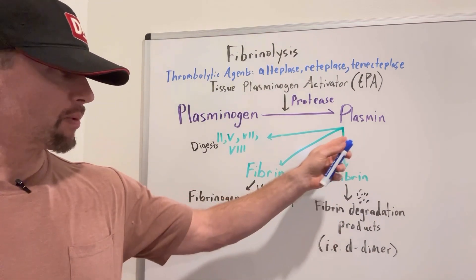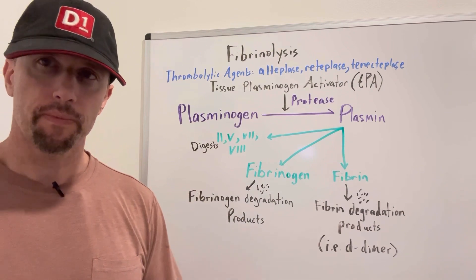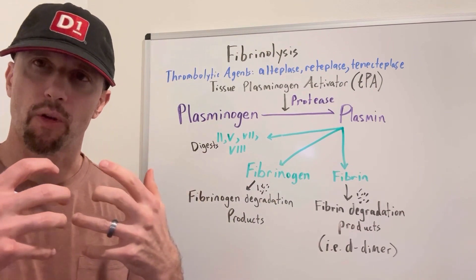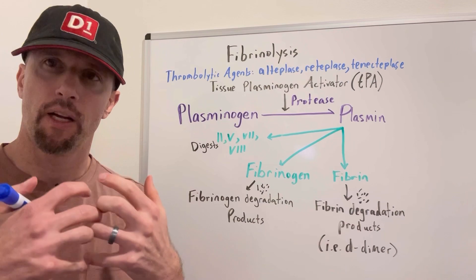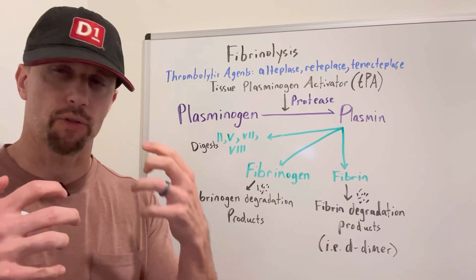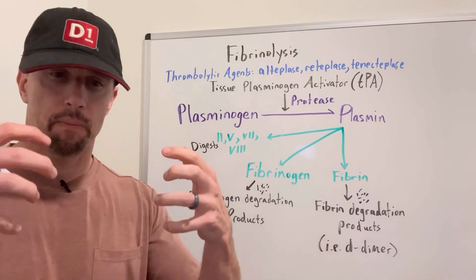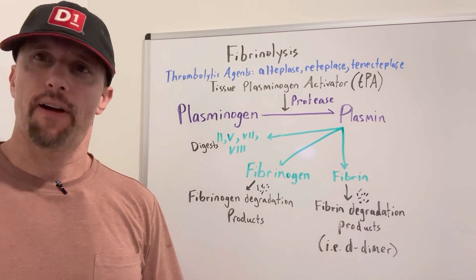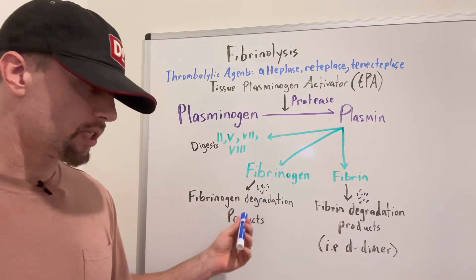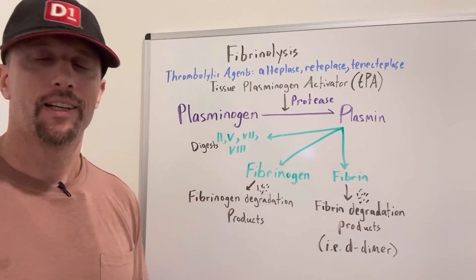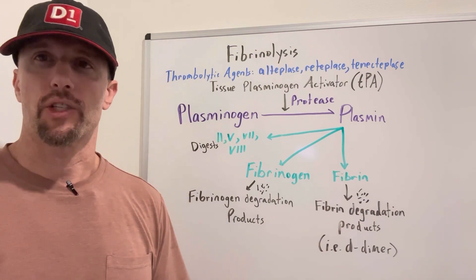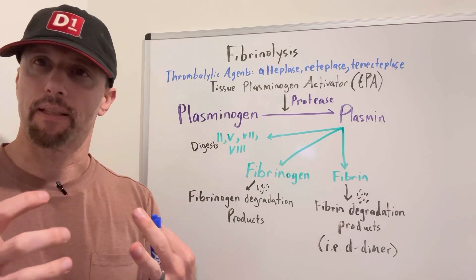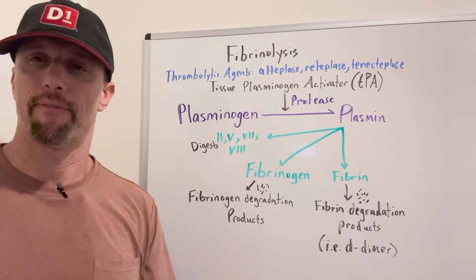Plasmin will also go and break down fibrinogen. Fibrinogen is that bridge that holds those aggregated platelets together — you have those two B3A receptors bridged by the fibrinogen. So breaking down fibrinogen into fibrinogen degradation products will actually help dissolve out that platelet plug within that fibrin mesh.